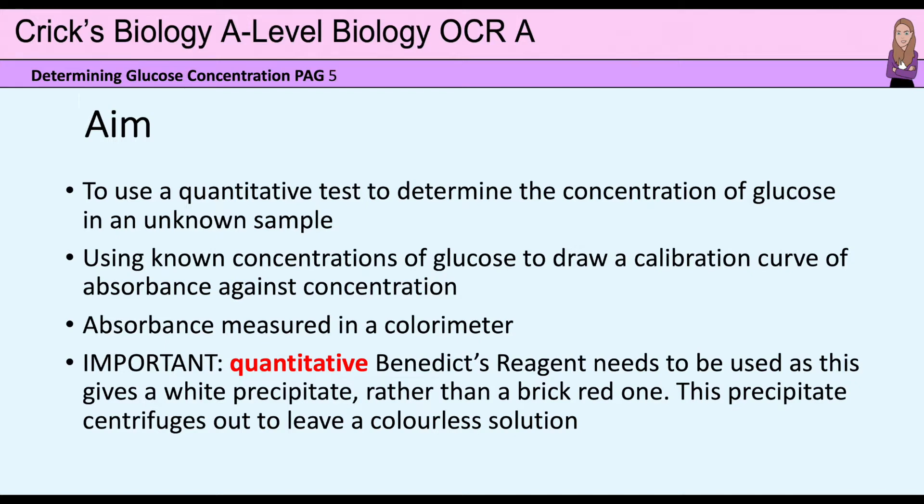We will be using known concentrations of glucose to draw a calibration curve of absorbance against concentration. The absorbance will be measured in a colorimeter. We use a quantitative Benedict's reagent as this gives a white precipitate which centrifuges out to leave a colorless solution, rather than the original brick red precipitate left behind by the normal Benedict's reagent.